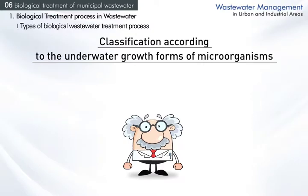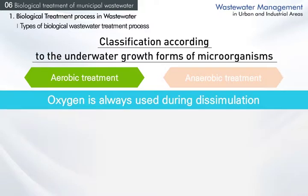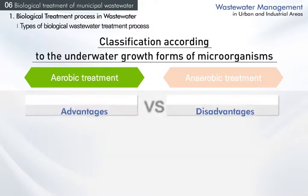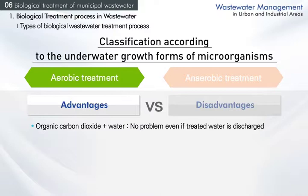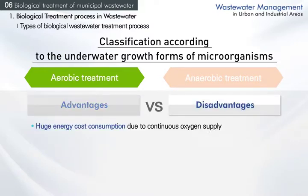The treatment process can also be divided by respiratory characteristics into aerobic and anaerobic treatment. Aerobic treatment uses oxygen for dissimilation to decompose pollutants, including processes like conventional activated sludge, trickling filter, rotating biological contactor, and fluidized bed. Organic pollutants are decomposed into carbon dioxide and water, enabling safe discharge into rivers or lakes. Since aerobic microorganisms grow and remove pollutants very fast, they can treat a huge amount of wastewater quickly. However, oxygen must be continuously supplied, which consumes energy.